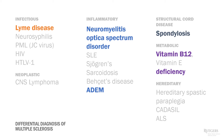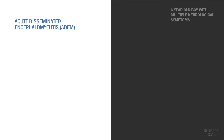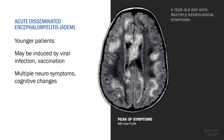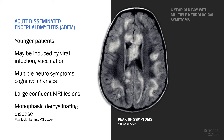ADEM is a typical board question: a young boy or girl presenting shortly after vaccination to the emergency room with multiple neurological symptoms, change in cognitive function, and angry-looking lesions on brain MRI. These differ from MS — they are not ovoid, they are larger, and they can affect both gray and white matter. In most cases this is a monophasic attack. Treatment is high-dose steroids. Several weeks to months later, the brain looks normal and there are no old lesions or black holes.